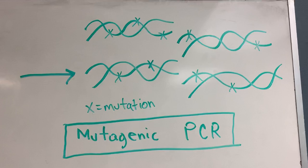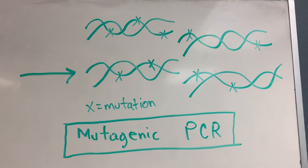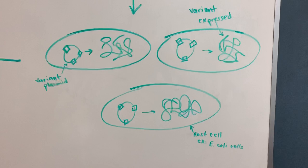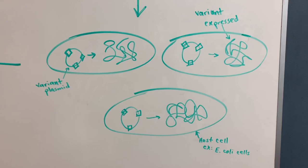Once you have those variants, you want to express them in some kind of host cell. So you start your expression process, and you can use E. coli cells, for example, to express those variants.